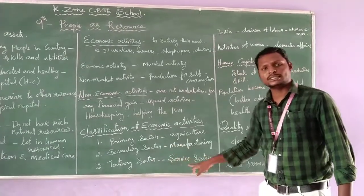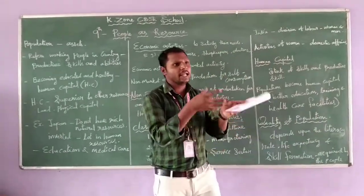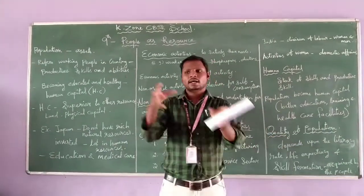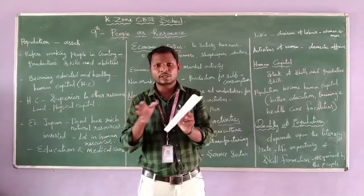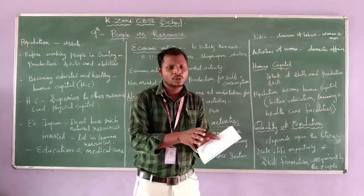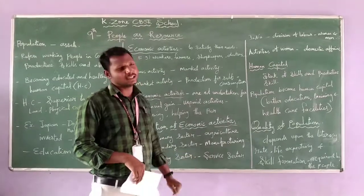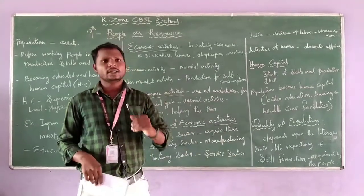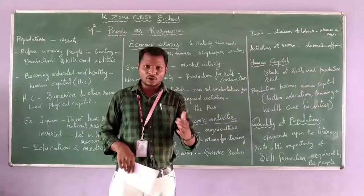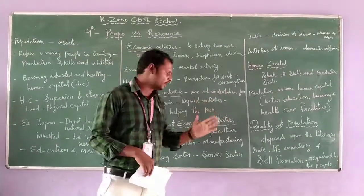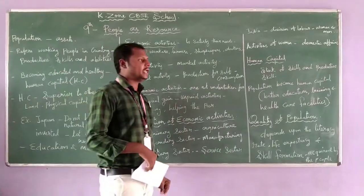After transforming raw materials into finished goods, the secondary sector sends them to the tertiary sector. The tertiary sector is also called the service sector. It takes finished goods and delivers them to the consumer. Examples of the tertiary sector include transport, education, and banking.